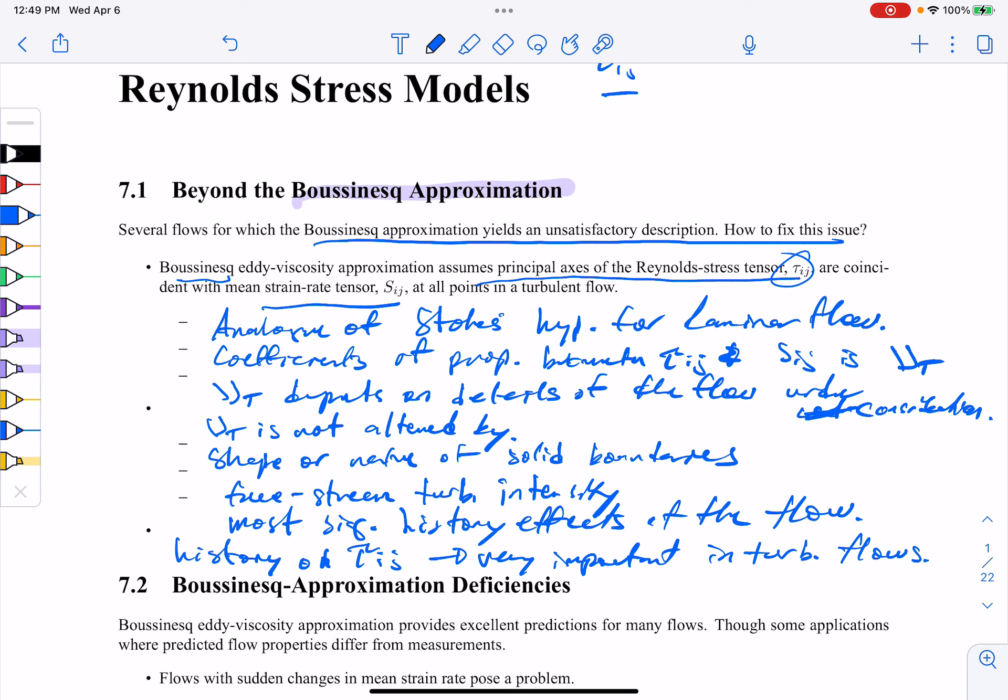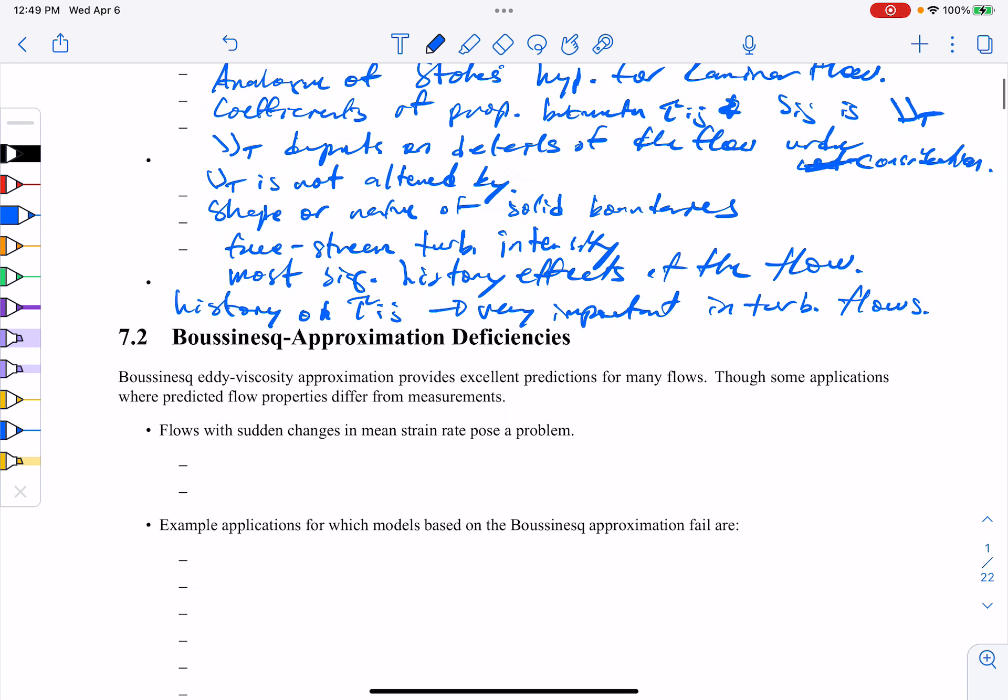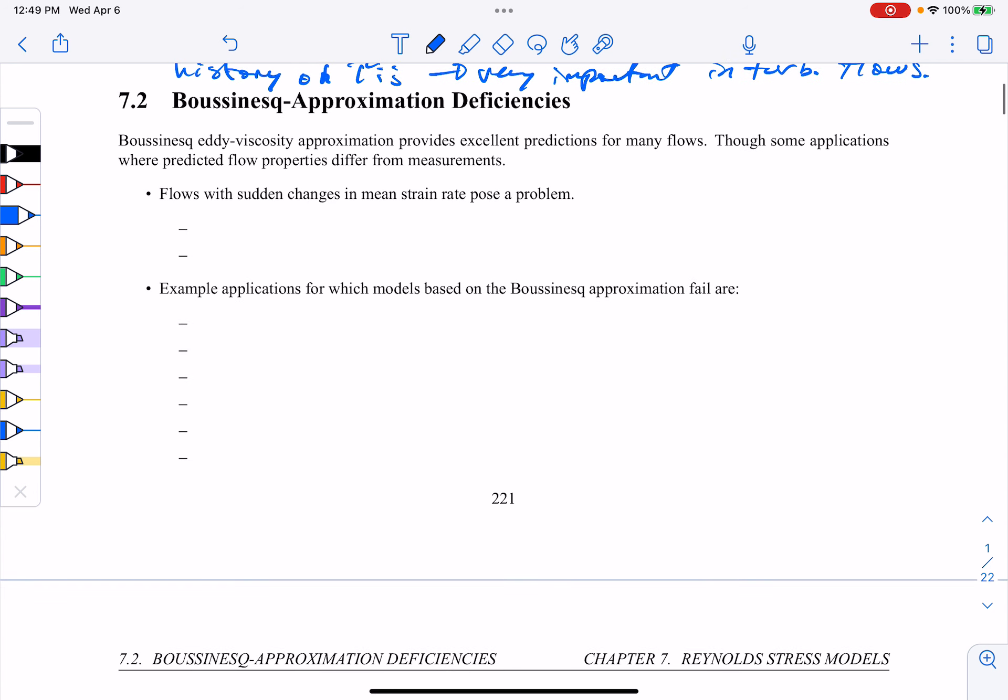So let's identify some of the deficiencies in the Boussinesq approximation. Indeed, for many flows provide excellent predictions. Some of these applications and predictions might falter relative to measurement because of deficiencies in Boussinesq approximation, and potentially Reynolds stress models of Reynolds stress type range closures might overcome them.